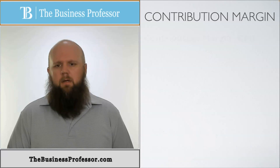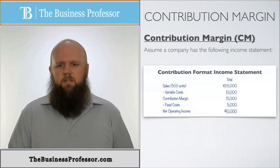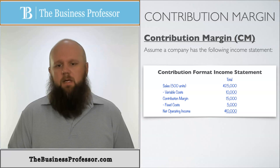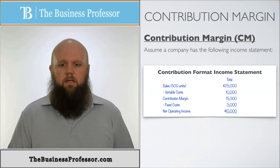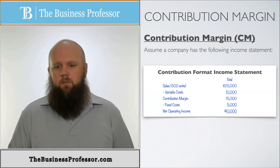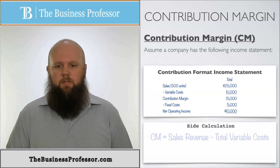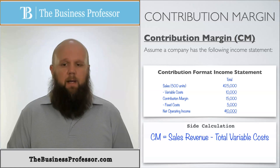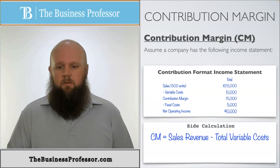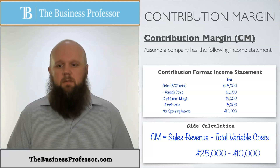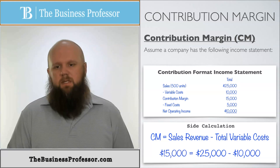Let's look at an example. Assume a company has a contribution-formatted income statement showing sales, variable costs, contribution margin, fixed costs, and net operating income. Using total amounts: sales revenue of $25,000 minus variable cost of $10,000 gives a contribution margin of $15,000, which is already shown in the contribution-formatted income statement.